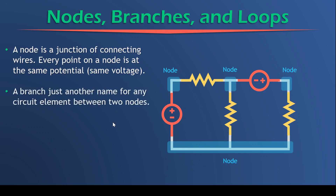What about a branch? A branch is just another name for any circuit element that is between nodes. So how many branches would we have here? Effectively it's how many elements we have — we have one, two, three, four, five elements, therefore we've got five branches. So the number of branches equals five and the number of nodes we've counted as four.